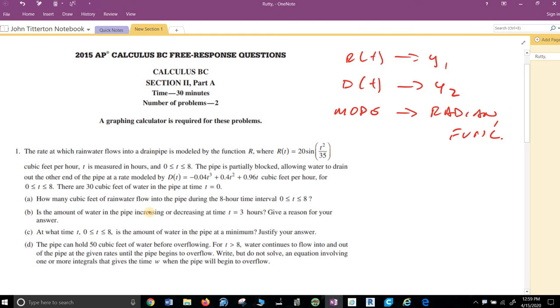There are 30 cubic feet of water in the pipe at time T equals 0. So, how many cubic feet of rainwater flow into the pipe during the 8-hour time period? So, this is the integral, because we're going from a rate in cubic feet per hour.